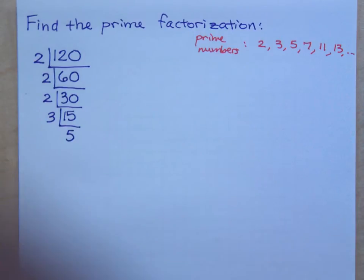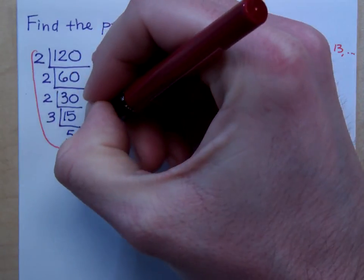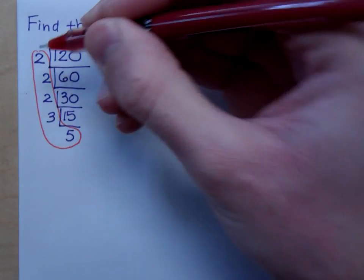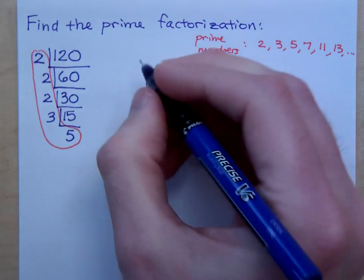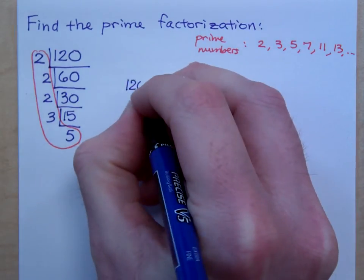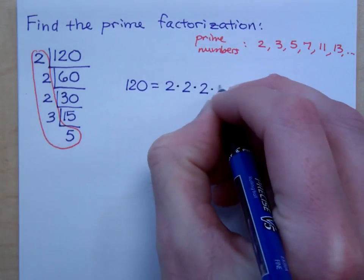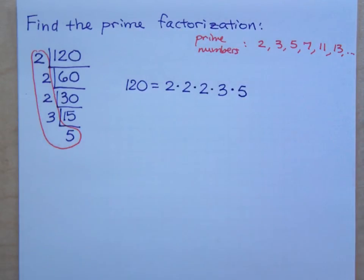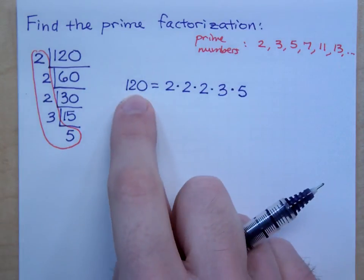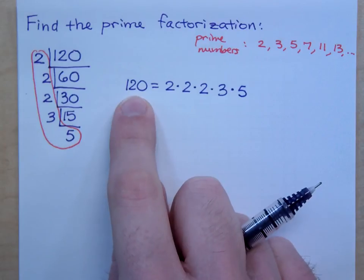So, all of the numbers that you have out here, all of these guys form your prime factorization. So, what we can say is that the number 120 is made up of these 3 factors of 2, a factor of 3, and a factor of 5. Those are the numbers that you would multiply. These are the prime numbers that you would multiply to get 120. And here's the thing. Every prime factorization is unique.